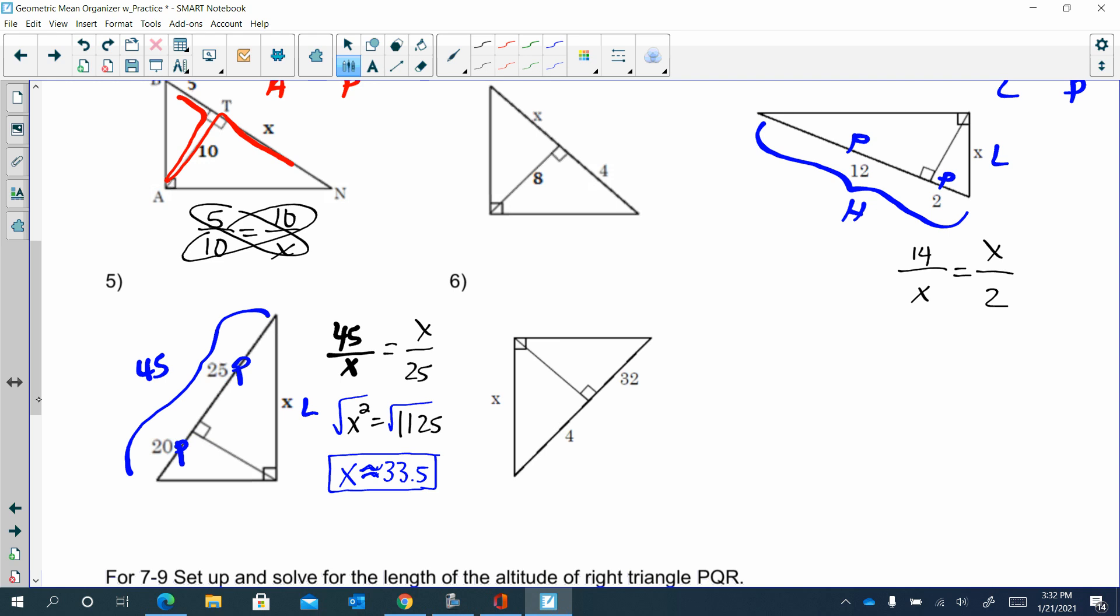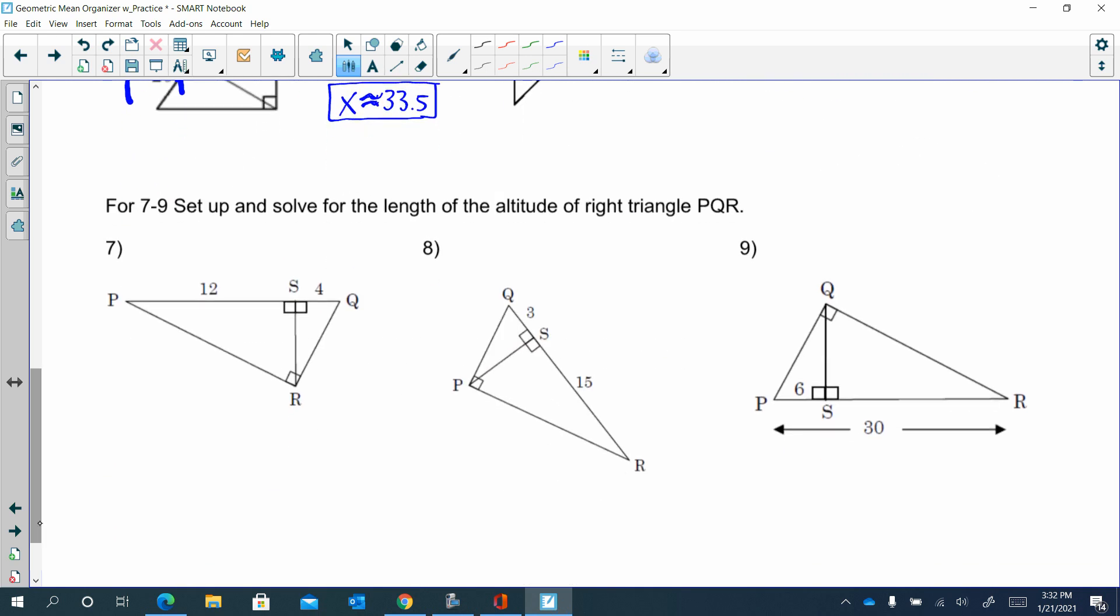Now, because on this section, if they want you to solve for the length of the altitude, then all of these are heartbeat. Another way of thinking of your heartbeat is your part over the altitude equals your altitude over your part. So let me fix my part. This is my part. This is my altitude, which I don't have, which is why it's the X. So 12 over X equals X over 4. X squared equals 48. You're going to take the square root. This is not a perfect square. So X is approximately 6.9.